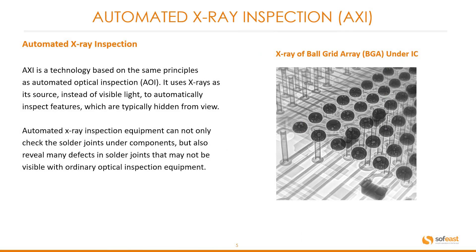Automated X-ray inspection is a technology based on the same principles as automated optical inspection, or AOI, but uses X-rays as its source instead of visible light to automatically inspect features that are typically hidden from view. Automated X-ray inspection equipment can not only check the solder joints under components but also reveal any defects in solder joints that may not be visible with ordinary optical inspection equipment.